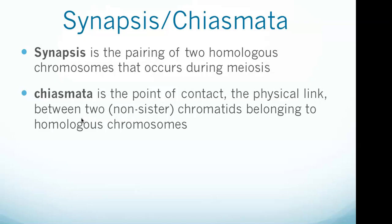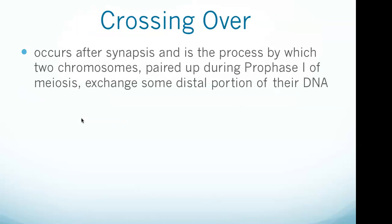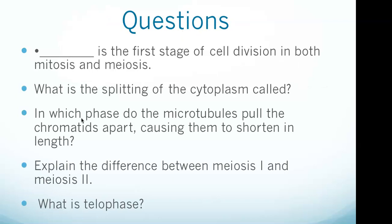In genetics, a chiasma is the point of contact — the physical link — between two non-sister chromatids belonging to homologous chromosomes. At a given chiasma, an exchange of genetic material can occur between both chromatids, which is called a chromosomal crossover, and this is much more frequent during meiosis than mitosis. Crossing over occurs after synapsis and is the process by which two chromosomes paired up during prophase one of meiosis exchange some distal portion of their DNA. Crossover occurs when two homologous chromosomes break and reconnect to the different end piece.